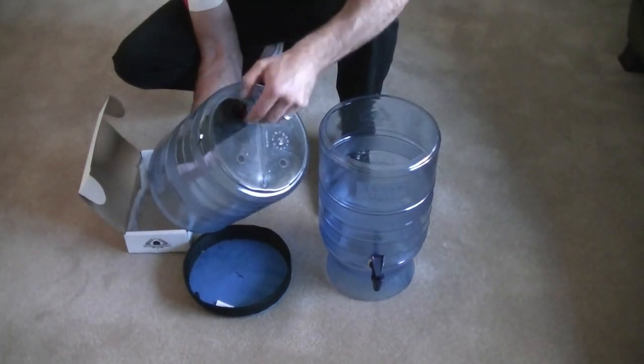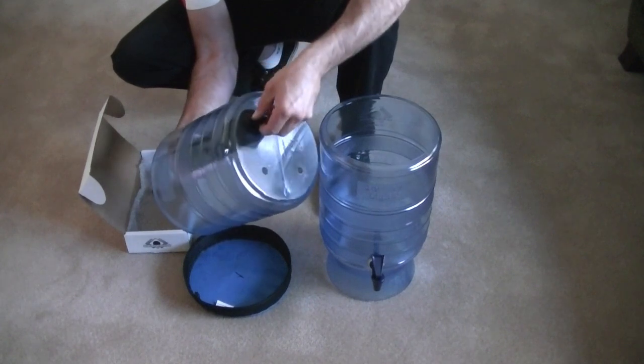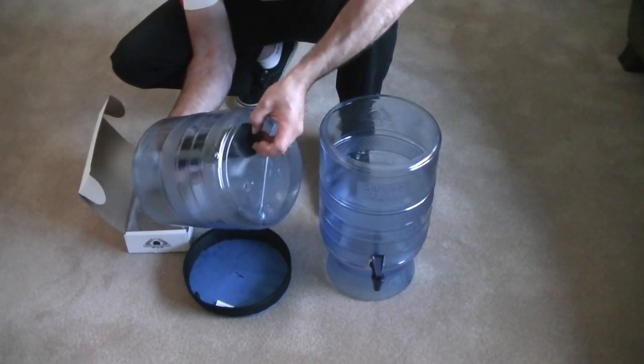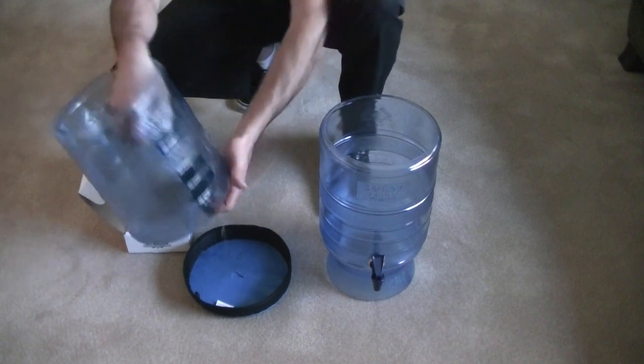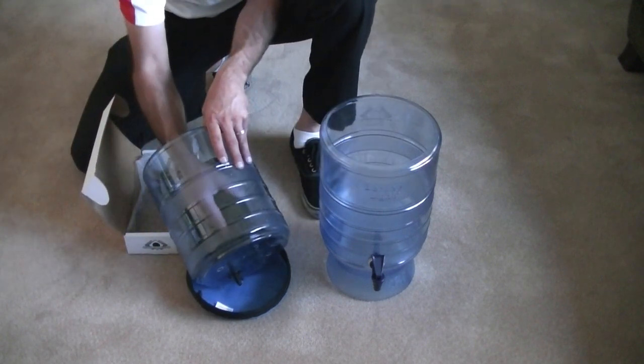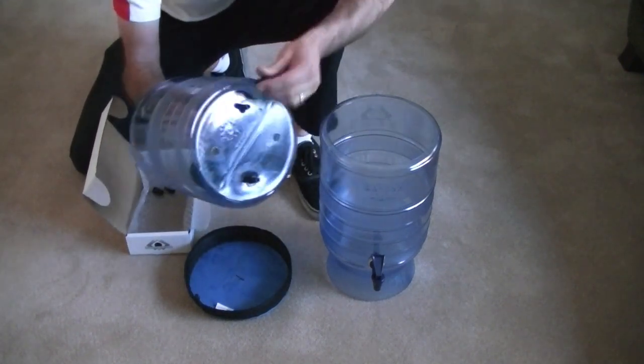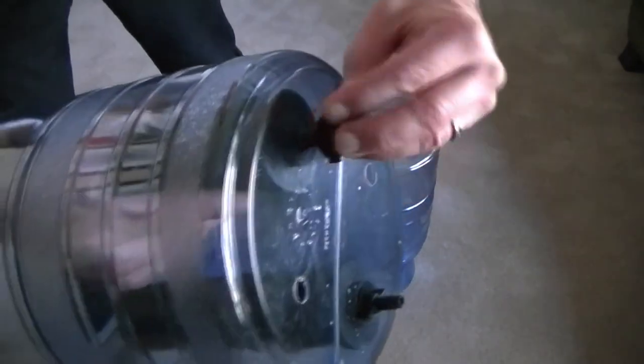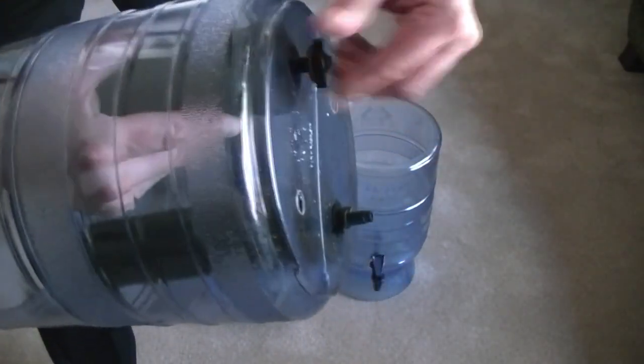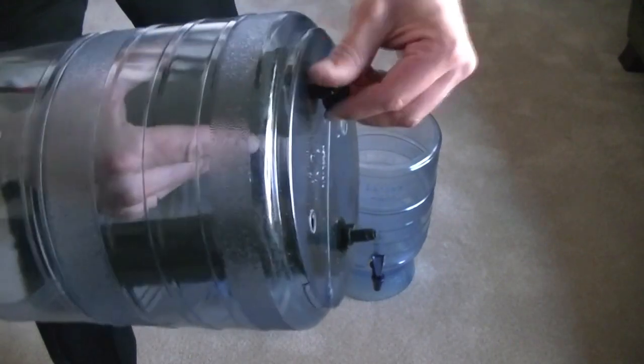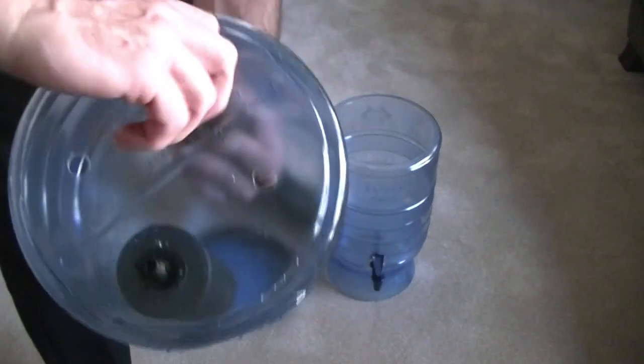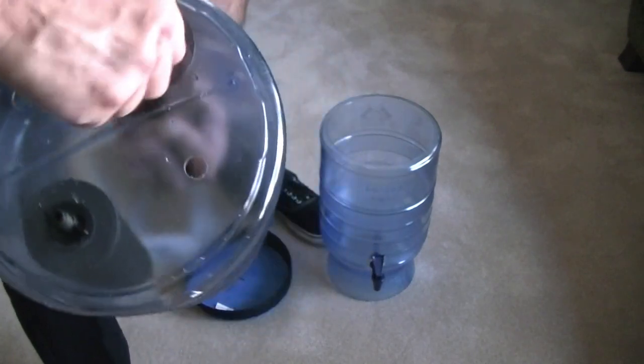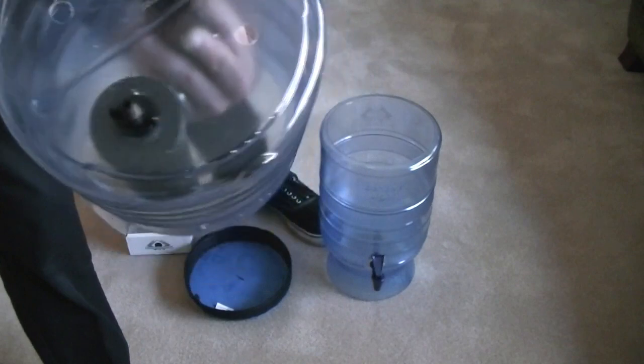Then we're going to do the same thing with the other filter. So I don't want it fairly snug, but I don't want to break that plastic, so just be aware of that. Put that on there. I'm right-handed, so I'm going to switch hands real quick. See, I'm just tightening that nut under the bottom of the filter. I put the rubber washer between the filter and this BPA-free plastic container.